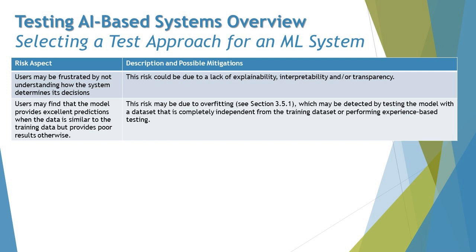The last risk is that users may find that the model provides excellent predictions when the data is similar to the training data but provides poor results otherwise. This risk may be due to overfitting, which we discussed in chapter 3, and may be detected by testing the model with a data set that is completely independent from the training data set, or by performing experience-based testing. Overfitting occurs when the model is trained on very similar data and cannot generalize to new data.